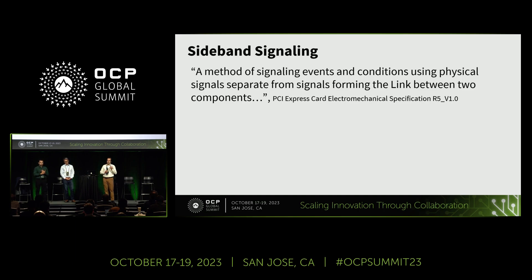This definition of a sideband signal makes sense in this environment. It's basically a method of signaling events and conditions using physical signals that are separate from the link between the two components — so it's an alternate signal, but it's not in the data path.